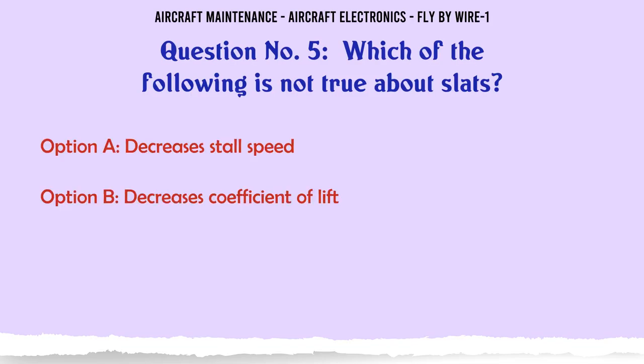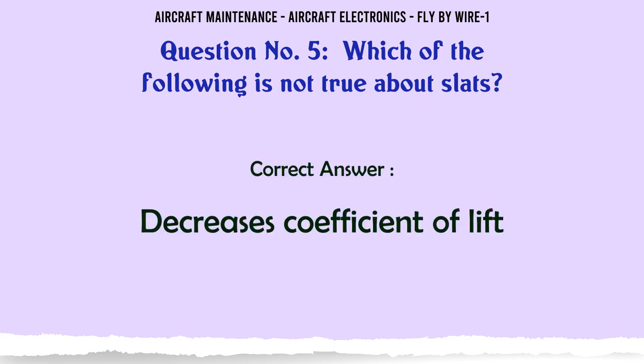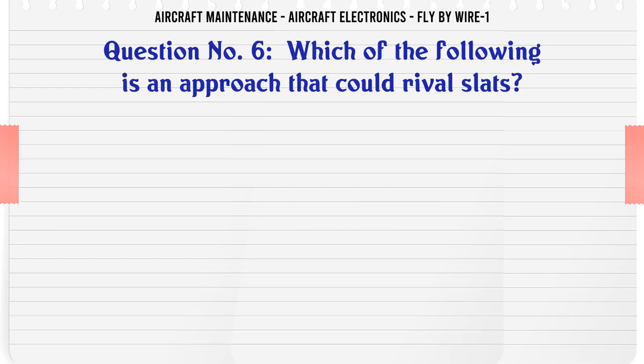Which of the following is not true about slats? A. Decreases stall speed. B. Decreases coefficient of lift. C. Helps an aircraft to take off and land in shorter distances. D. Helps an aircraft to fly at slower speeds. The correct answer is: Decreases coefficient of lift.